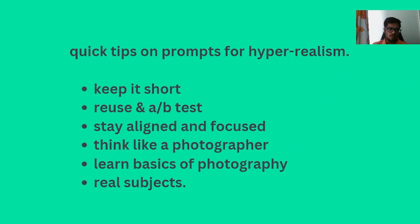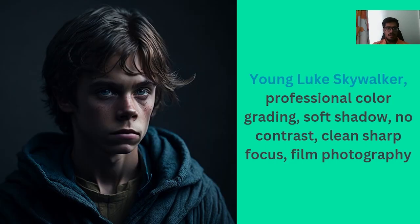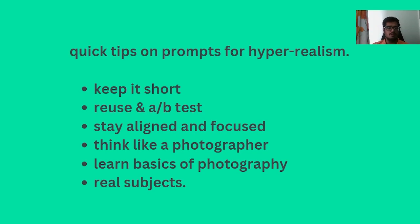A couple of tips when trying to generate hyper-realistic photos. Number one: keep it short. If your prompt is too long, the model will likely get confused and the generation won't be great. Number two: A/B test — once a prompt is generated, play around with certain elements, like changing the photography style or adding or removing contrast. Number three: visualize what you want to generate first, then add elements to build a complete prompt in that direction.